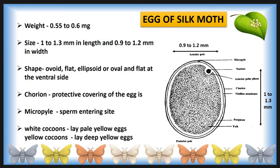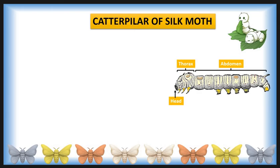If the color of the chorion is white, then the color of the egg is pale yellow. When the color of the chorion is yellow, then the color of the egg is deep yellow. Next, we look at the morphology of the caterpillar of the silk moth.